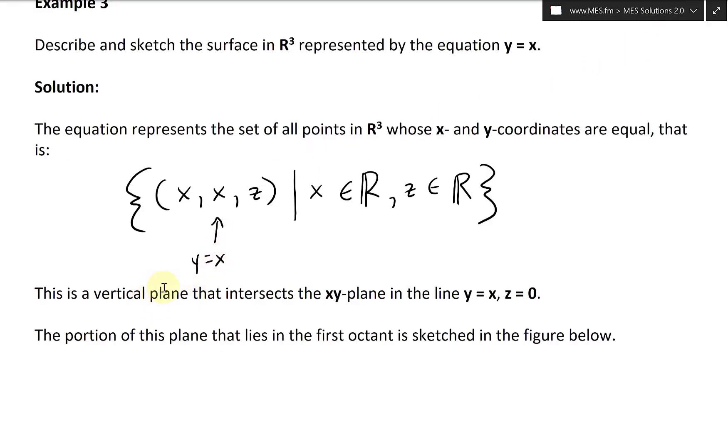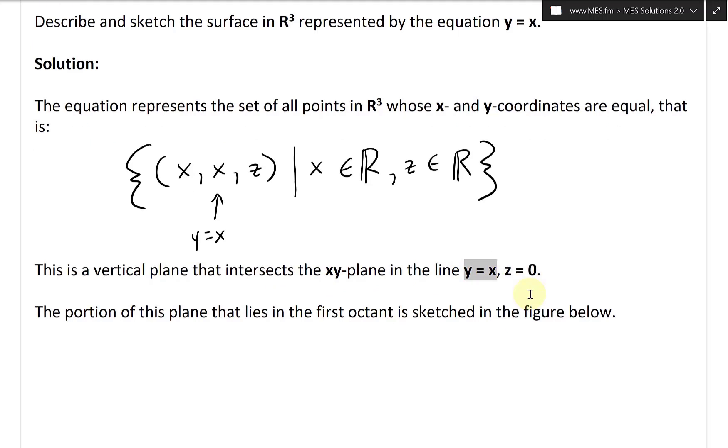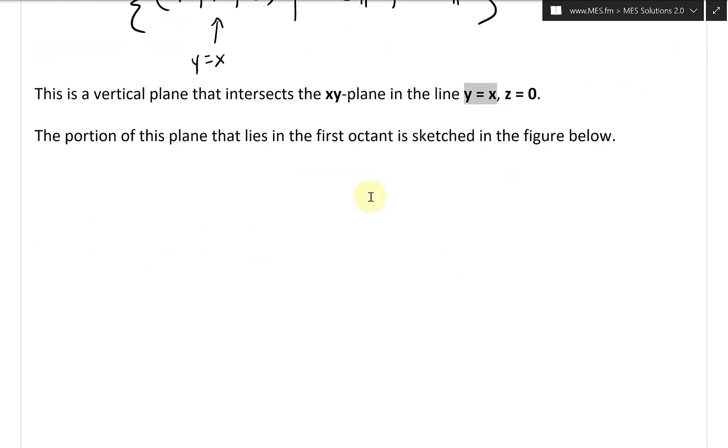Now this is just a vertical plane that intersects the xy-plane in the line y equals x and z equals zero, and the portion of this plane that lies in the first octant is sketched in the figure below.